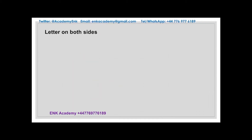We may have a situation where we have the variable or the letter on both sides. Here we are talking about x, but it can be any other letter — it could be n, it could be z. To solve an equation, you have to get the letter on its own on one side of the equation. Let's say you have 2 minus 2x equal to 26 plus 4x.